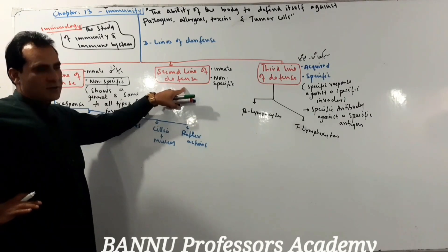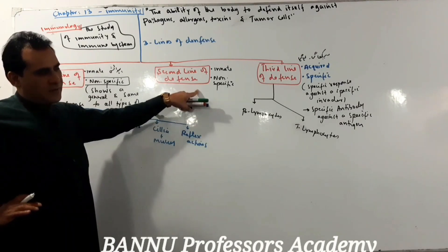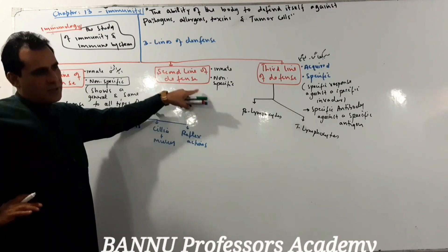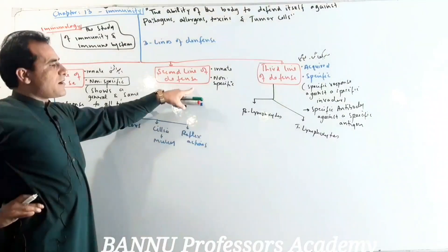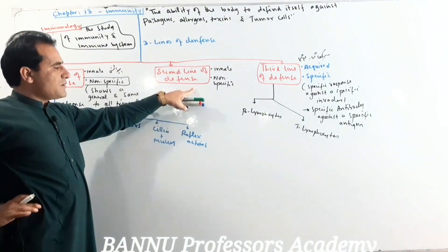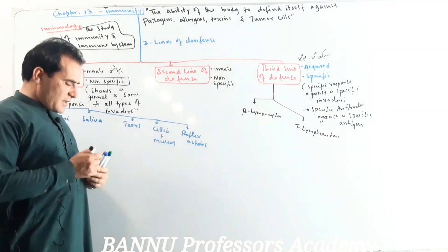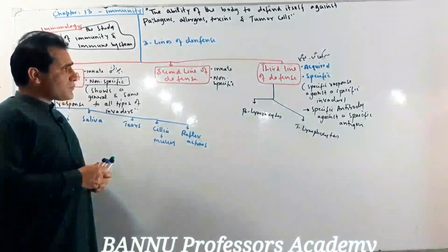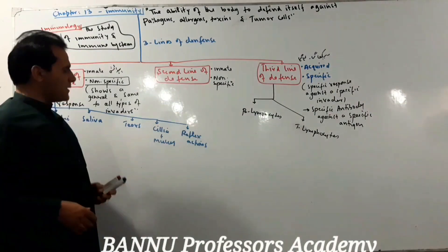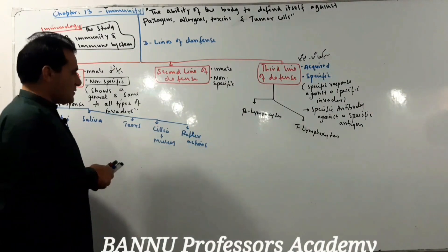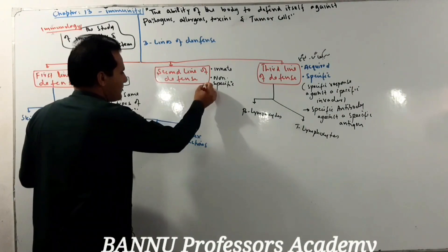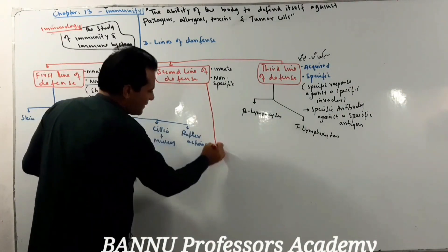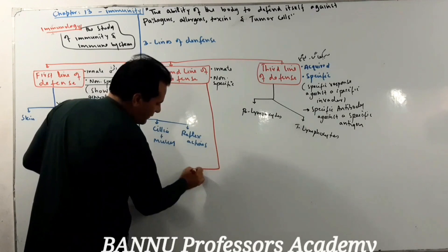We know that there is inflammation, we know that there is interference, and we know that there is a complementary system. So the components of this system are separate. What system is it? The second line of defense.